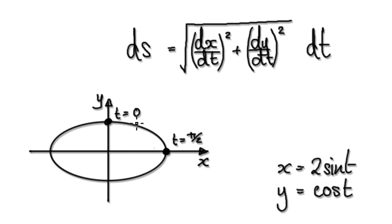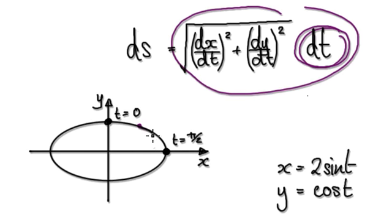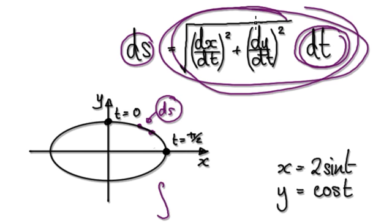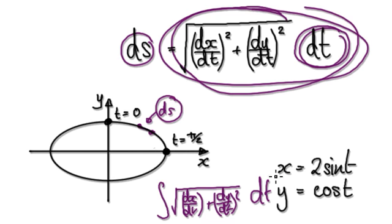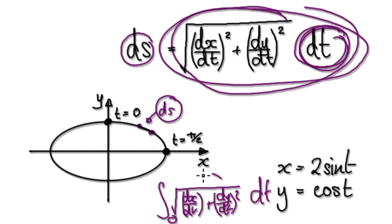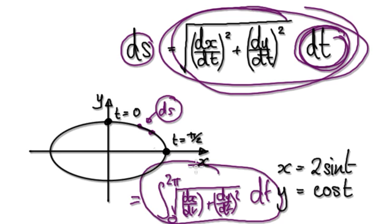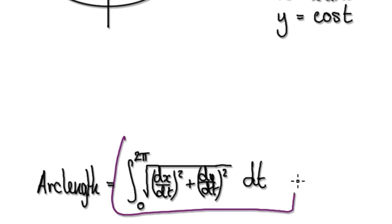So if you want to work out the arc length — the whole path — you sum up all the ds. That means integrating the square root of (dx/dt)² plus (dy/dt)² times dt. One full revolution takes 2π, so you integrate from 0 to 2π. The arc length is given by this integral.